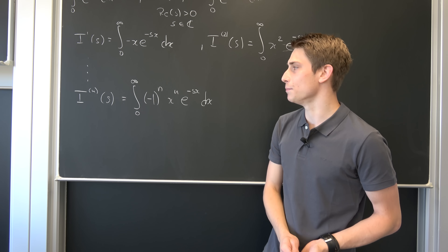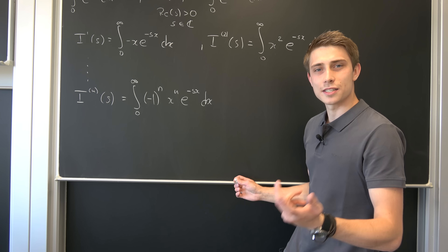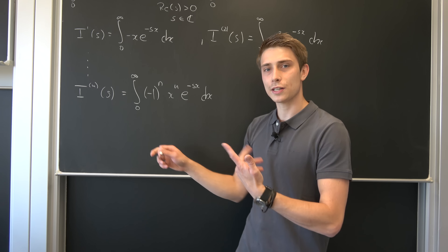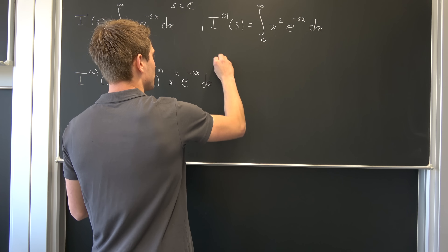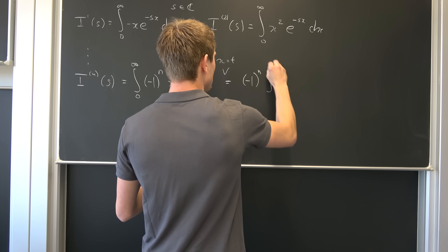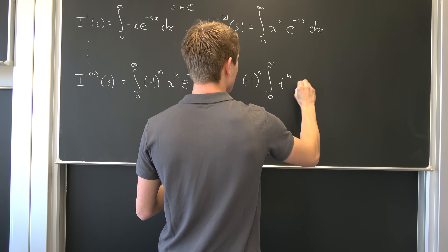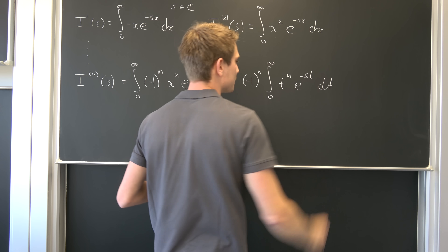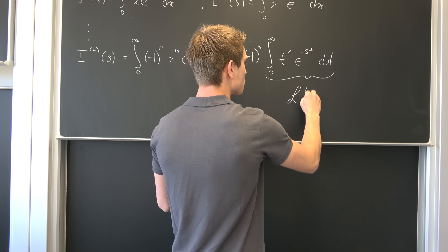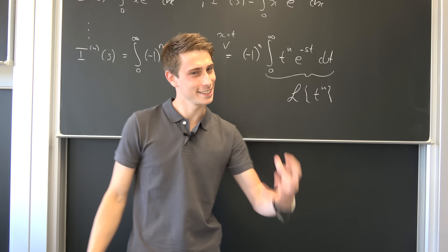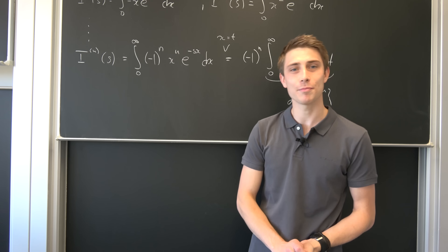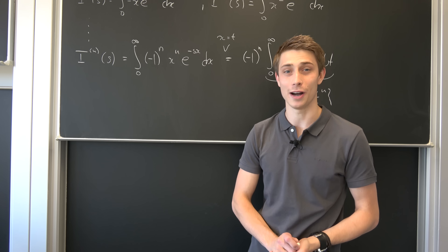Once I reached this point I immediately saw something extraordinary. Why not say that x is nothing but t? So let's do a substitution and bring the factor to the outside. We end up with negative 1 to the nth power times the integral from 0 to infinity of t to the nth power times e to the minus s times t dt. And that's fantastic — this right here is nothing but the Laplace transform of t to the nth power. So we are going to derive the Laplace transform of t to the nth power now and see if we get our gamma function.